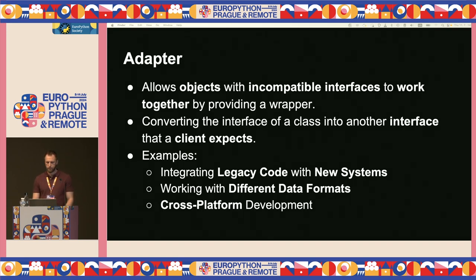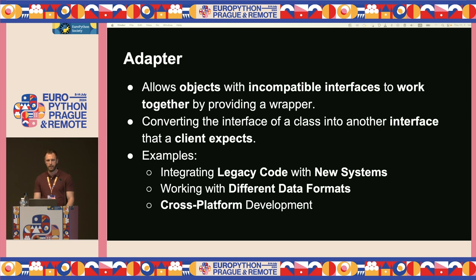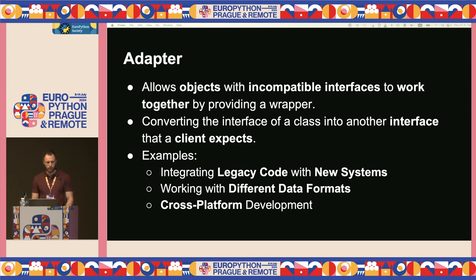The first structural pattern is Adapter. The Adapter pattern allows objects with incompatible interfaces to work together by providing a wrapper — converting one interface into another that the client expects. A real-world analogy: traveling from the US to Europe, you need a power adapter to connect your laptop charger to the outlet. Use cases include integrating legacy code with new systems, working with different data formats, and cross-platform development.